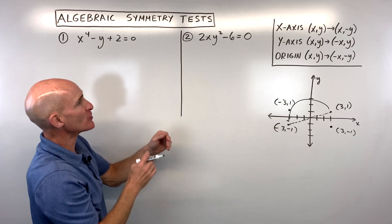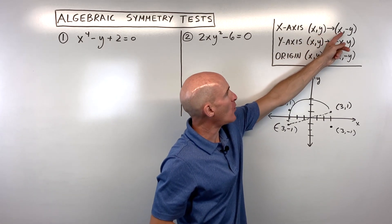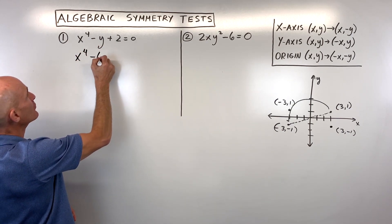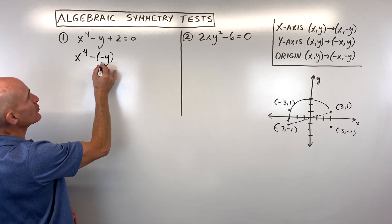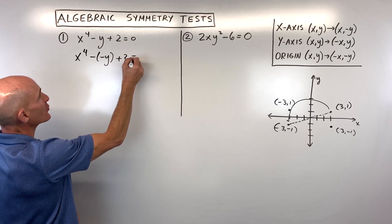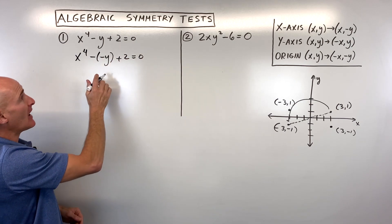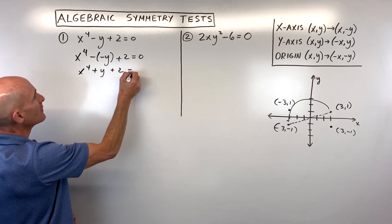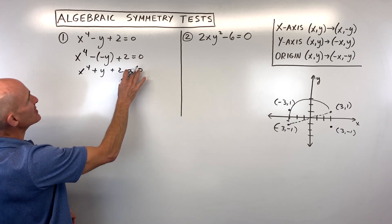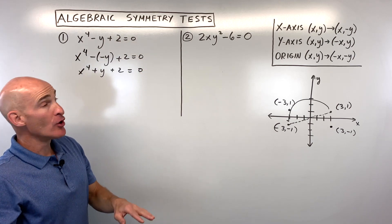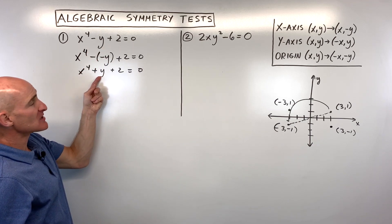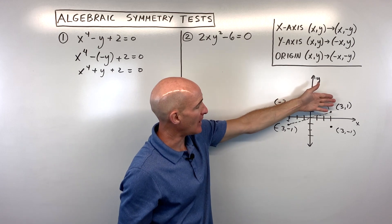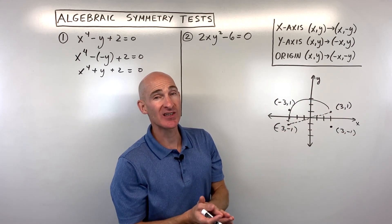Starting with example number one, let's test for x-axis symmetry first by replacing y with negative y. Wherever I see y, I put in negative y — I usually put it in parentheses to treat it like a group. When I simplify, a negative times a negative gives us a positive. Looking at this equation, it's not the same as the original — this is negative y, the original is positive y — so it doesn't have x-axis symmetry.